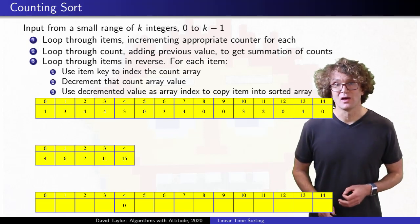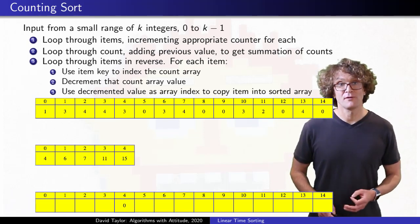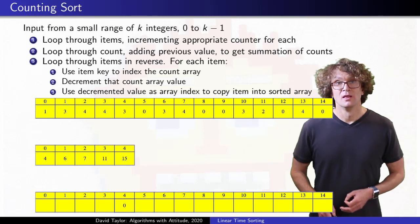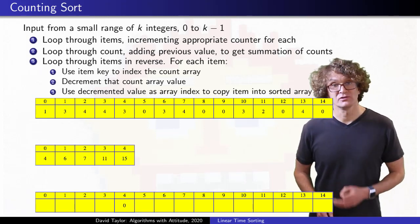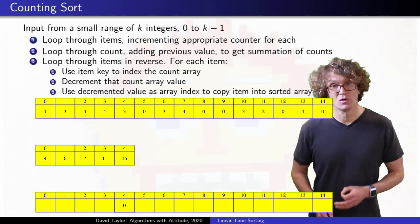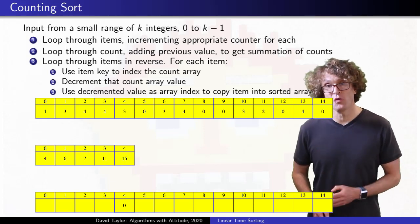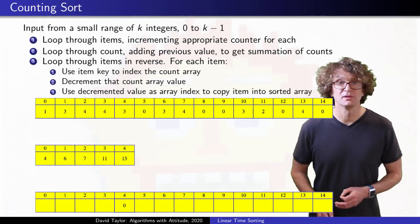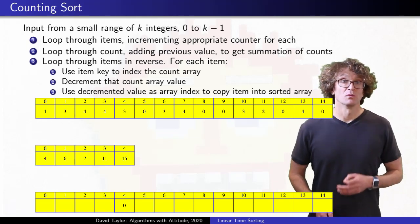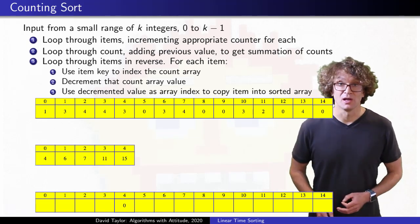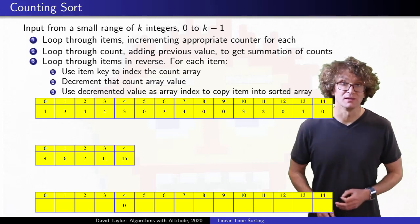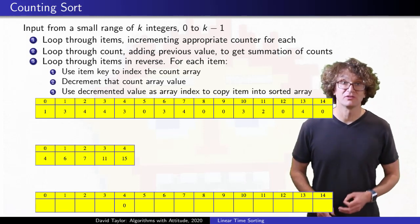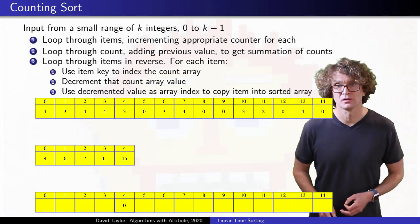So the algorithm decrements the 0 counter, and then uses that value as an index, where the reference gets copied. That decrement is important. The highest indexed key 0 object went into index 4, but there are more objects with key 0, and we don't want to put them in the same place. When we placed that last 0 key object, we modified the index, so that now we are ready to place the second highest index 0 key object.